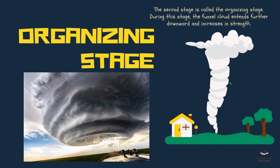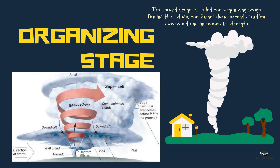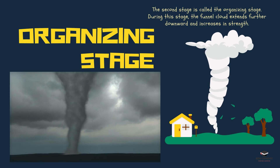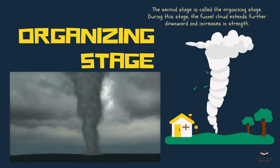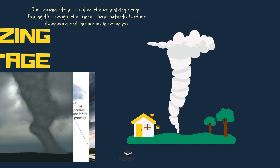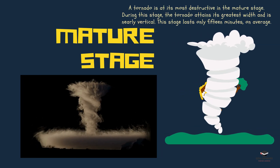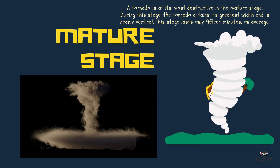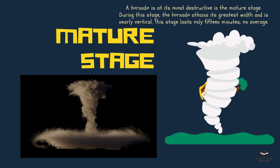Before a tornado forms completely, there is a stage called the organizing stage or predecessor stage. During this stage, certain things in the atmosphere start coming together which can make a tornado happen. Cloud formations like wall clouds, funnel clouds, or rotating clouds called mesocyclones might be seen in this stage.